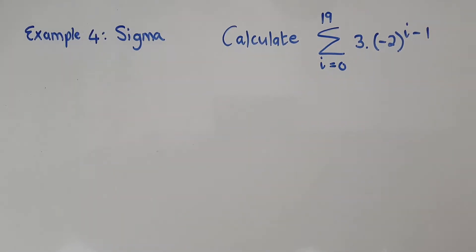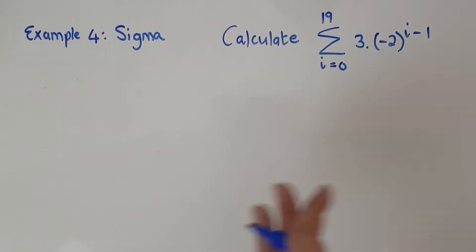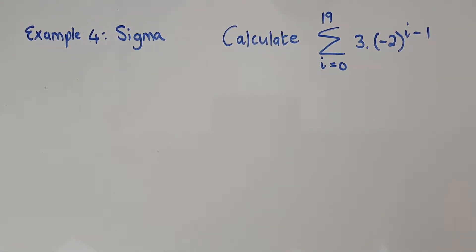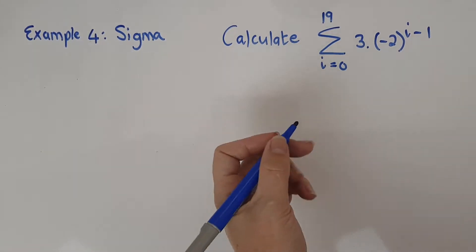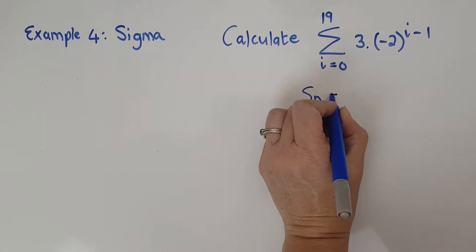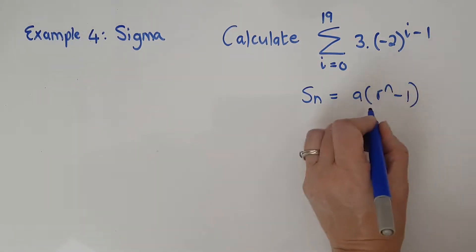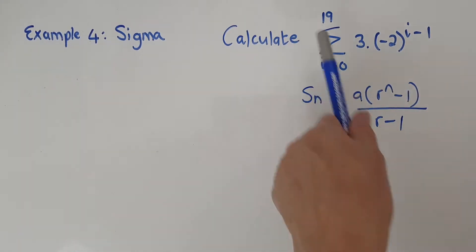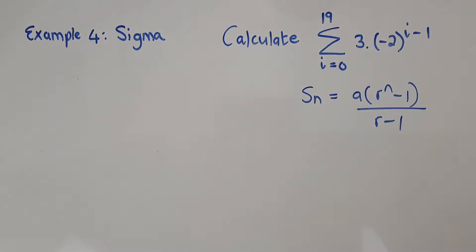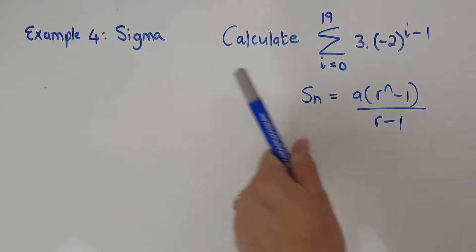For the fourth example, we're working with sigma notation. They just say 'calculate' — no other words. How do I know this is geometric? The formula has an exponent in it, so it's definitely geometric. That means when I use my sum formula, I'm going to end up using my geometric sum formula. I know I need to find Sn — that's what 'calculate the sum' means.